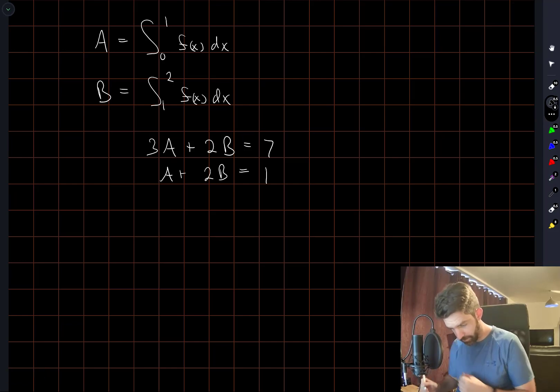And we should be able to just solve the algebra here pretty quickly, straightforwardly, and then at the end what we're going to want is the integral from 0 to 2, which is A plus B.